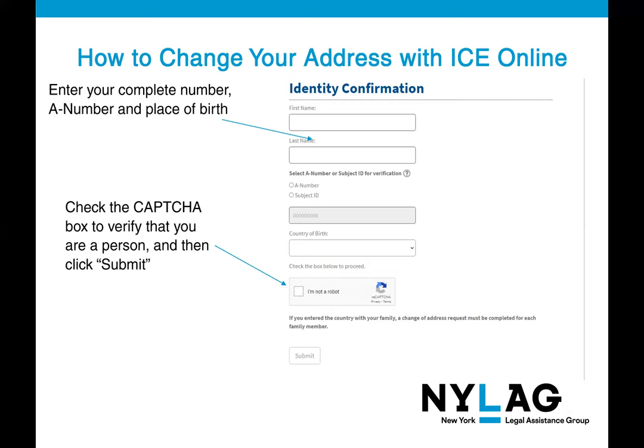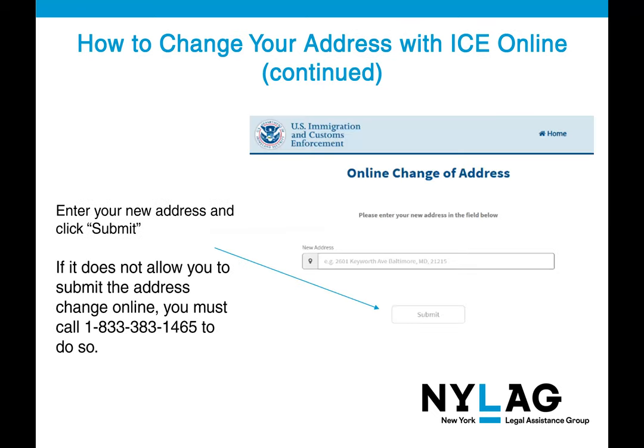To change your address with ICE online, visit their website where you can enter your complete name, A number, and place of birth. Check the CAPTCHA box to verify you are a person and click Submit. That will take you to a page where you enter your new address and click Submit. If the website does not allow you to submit the address change online, you must call ICE to do so.